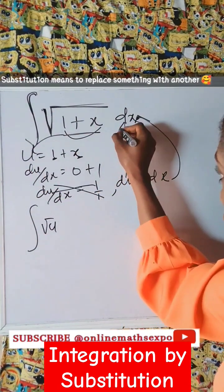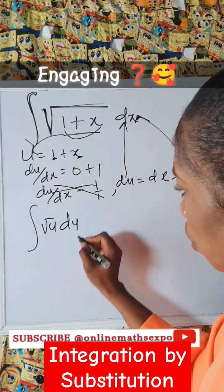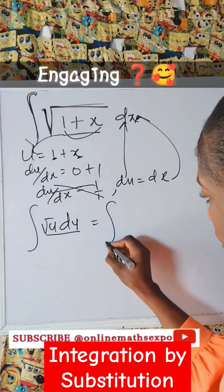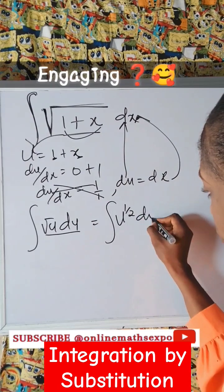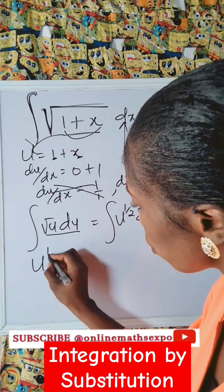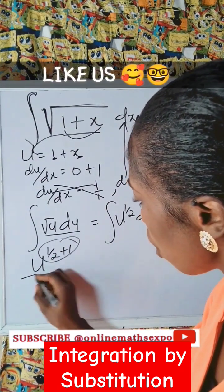This will take du. So we have du. Do your normal integration. You have integral of u to the power of half du, and that will give us u to the power of half plus one all over half plus one plus c.